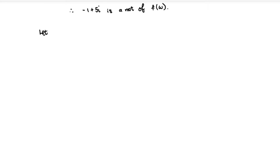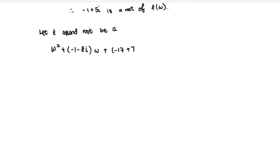Let the second root be called a — use a simple letter, not something close to existing variables. Since we know both roots, we can write: w² + (−1 − 8i)w + (−17 + 7i) = (w − (−1 + 5i))(w − a), using the classic quadratic factorisation approach.